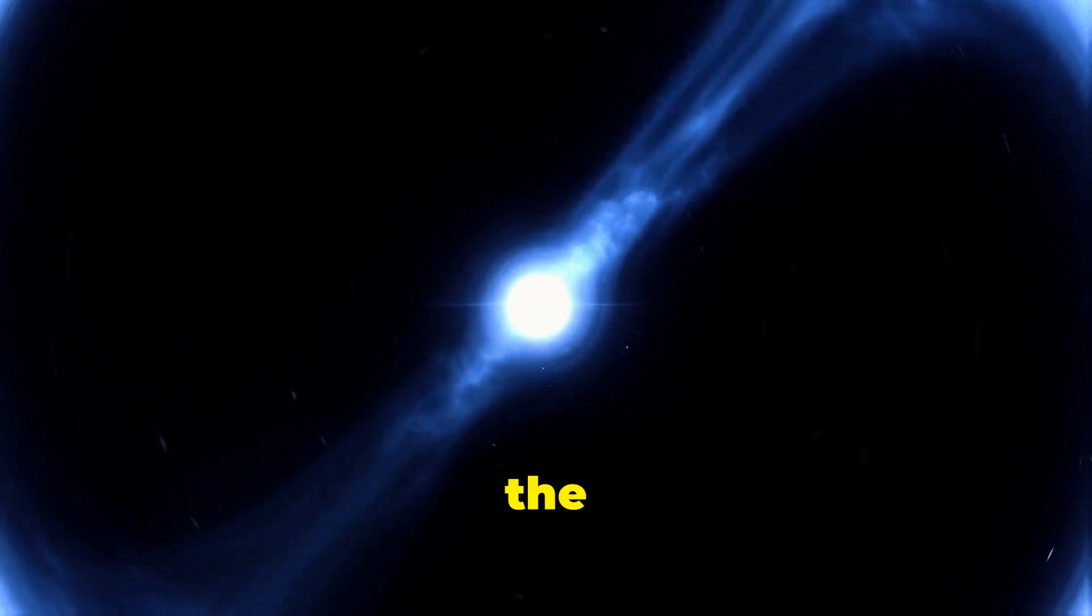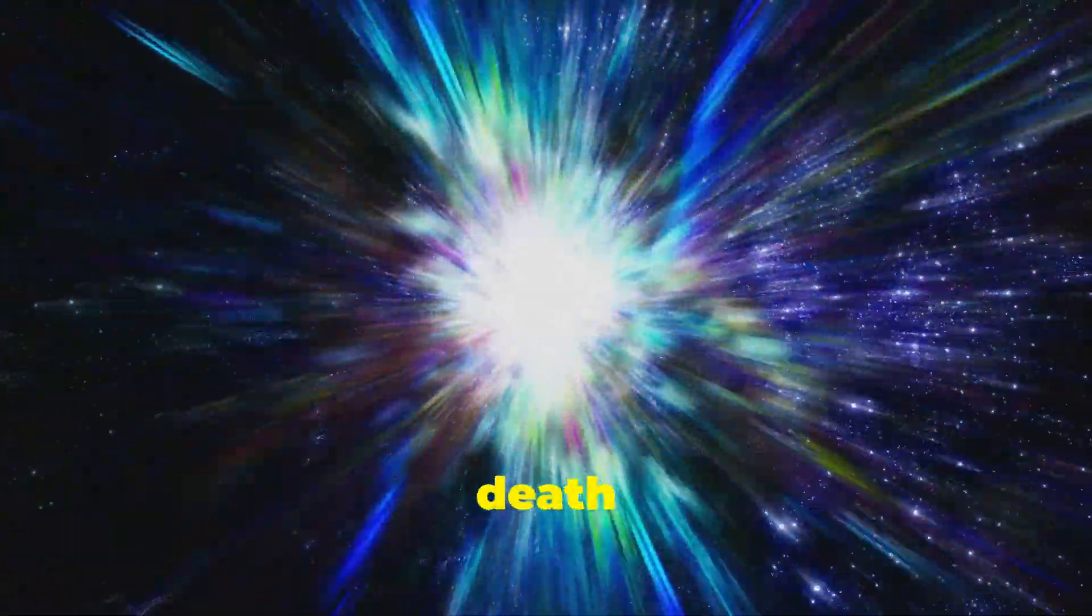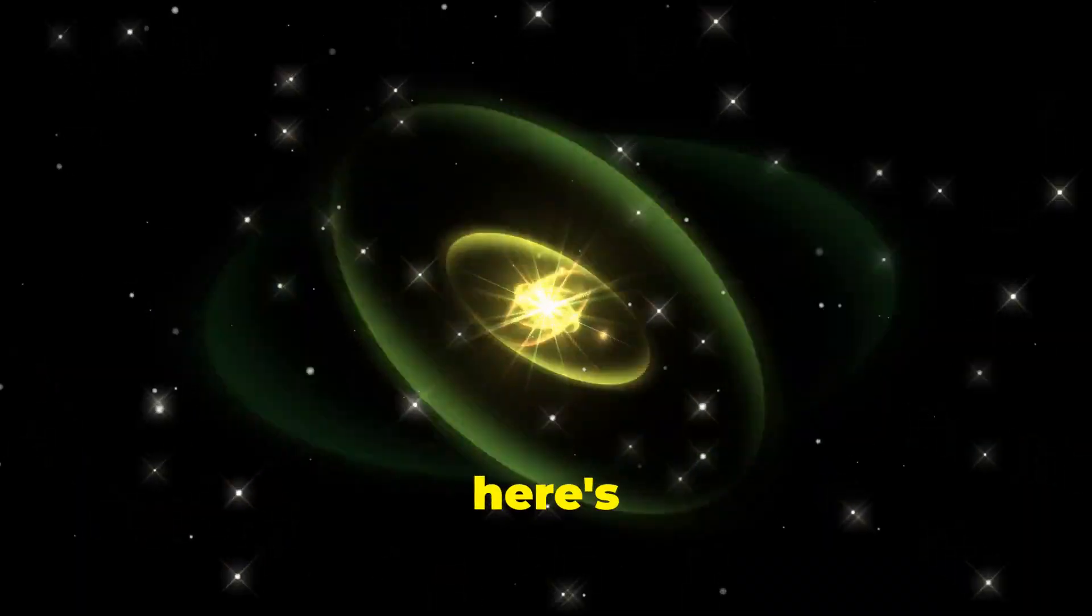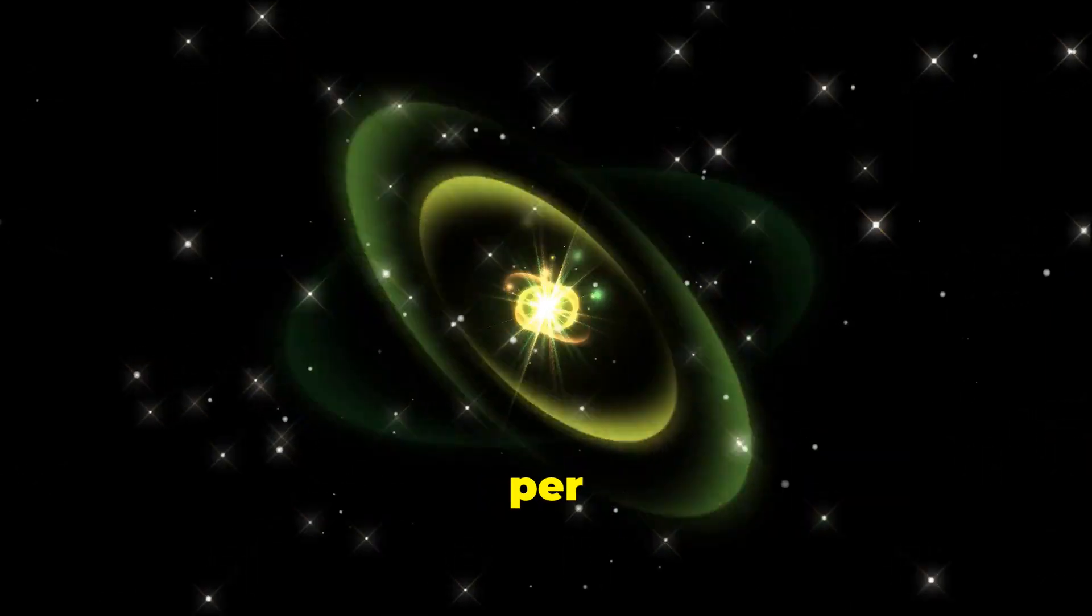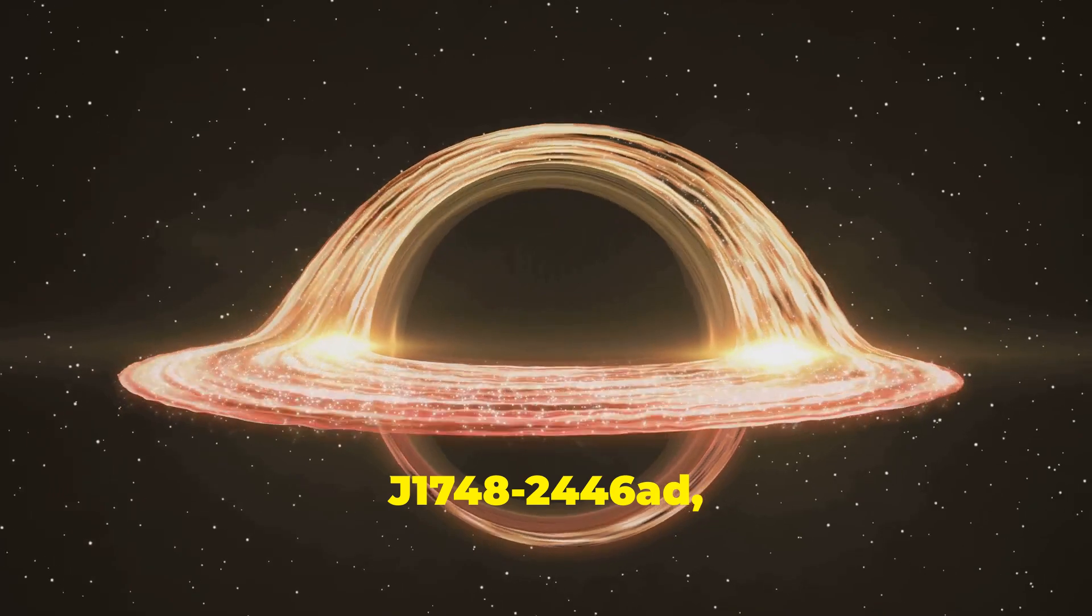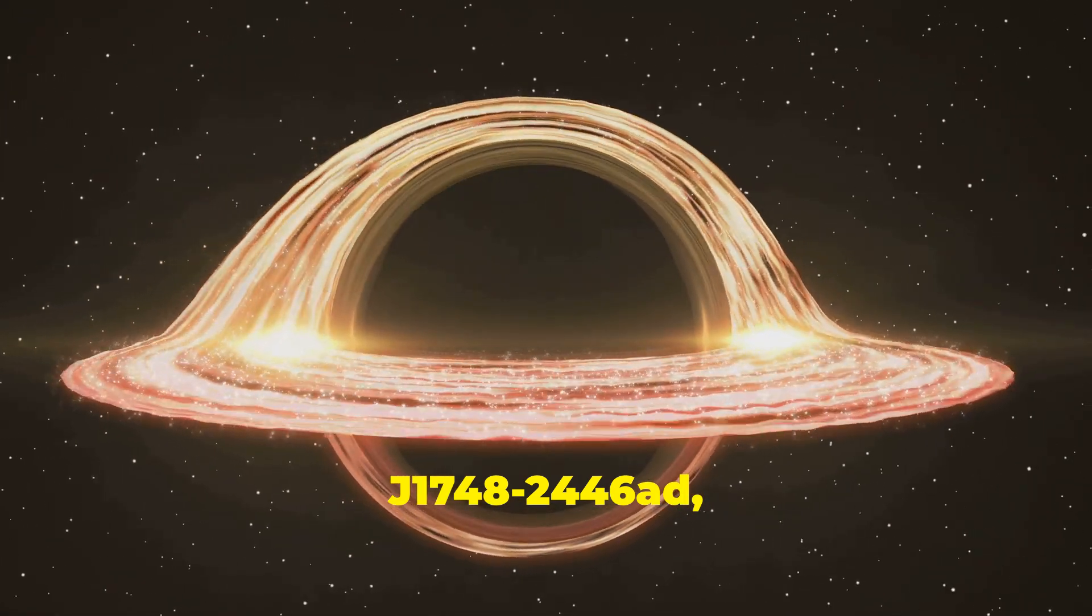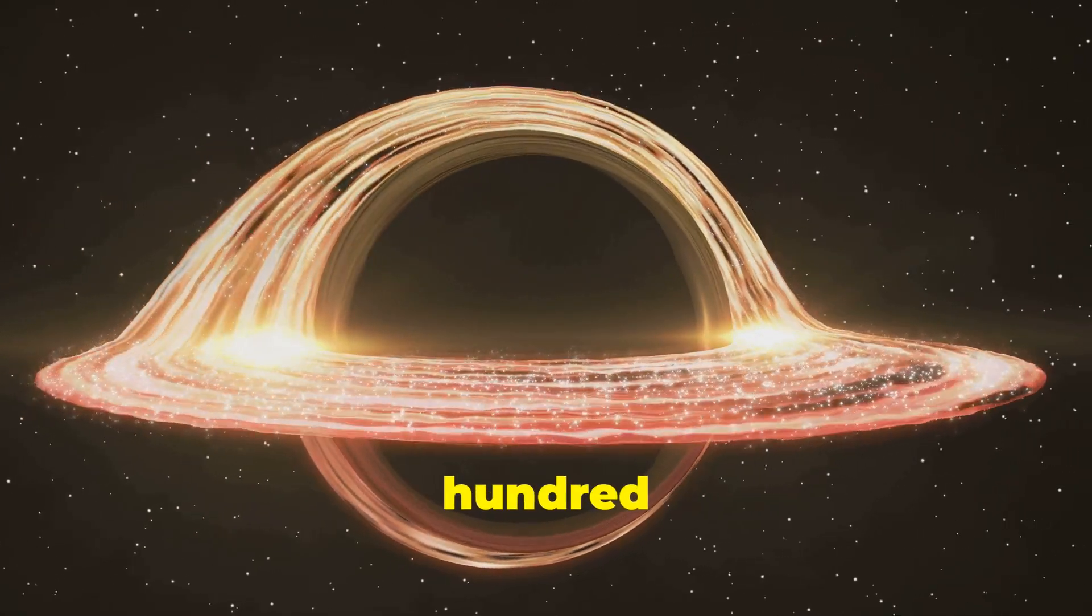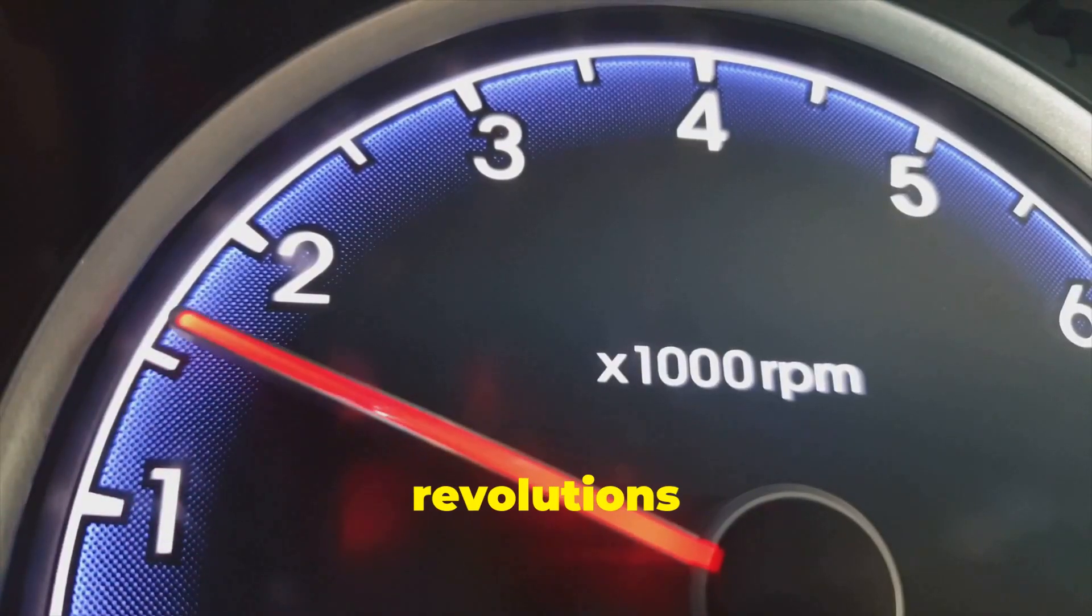Neutron stars are some of the most extreme and bizarre objects in the known universe. These stellar remnants are born from the death throes of massive stars, and they pack more mass than the Sun into a sphere no larger than a city. But here's the really mind-blowing part. Neutron stars can spin hundreds of times per second. The fastest spinning neutron star ever discovered, PSRJ-1748-2446 ad, whirls at an astonishing 716 rotations per second. That's over 42,000 revolutions per minute.